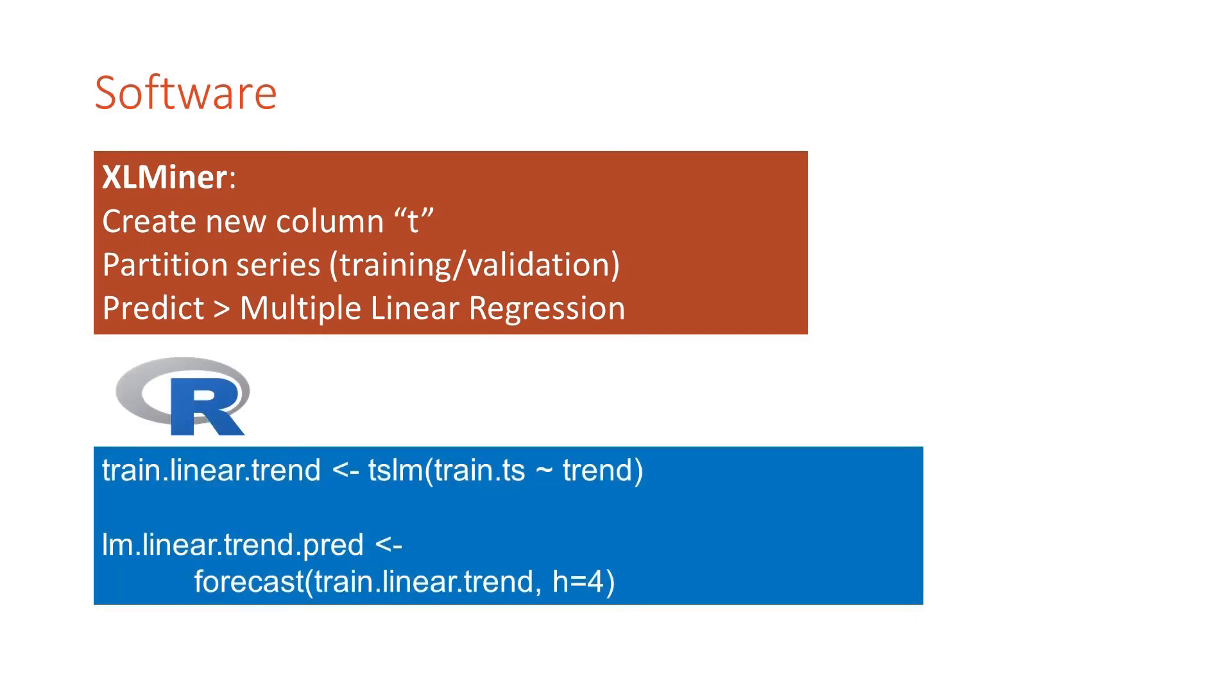If you're using R, we can use the tslm function. And there, we specify trend as the single predictor. After you create the linear regression model, we can use it to forecast the future. And in this example, the second command generates forecasts for four quarters in the validation period.